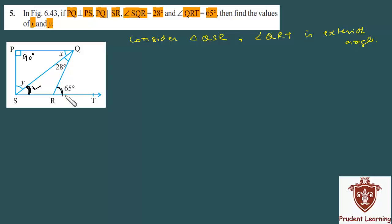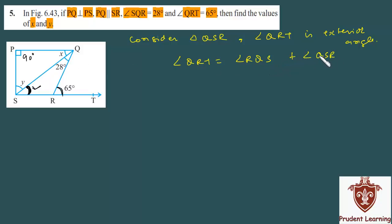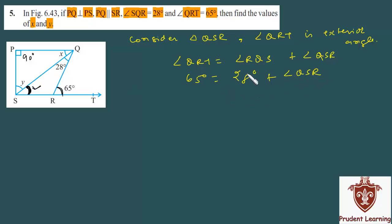What is the exterior angle property? The exterior angle equals the sum of the two non-adjacent interior angles. Therefore, we can write angle QRT as the sum of angle RQS and angle QSR. Angle RQS is 28 degrees as given, plus angle QSR which we have to find. So 65 degrees equals 28 degrees plus angle QSR.